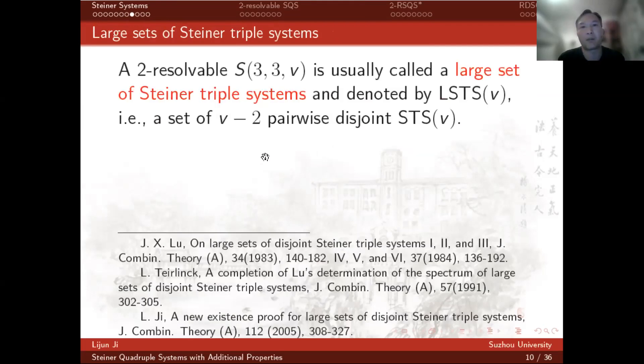A two-resolvable S(3, 3, v) is usually called a large set of Steiner triple systems and denoted by LSTS(v). That is to say, a large set of Steiner triple systems is a partition of the set of triples into v minus 2 pairwise disjoint Steiner triple systems.